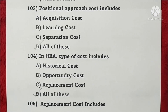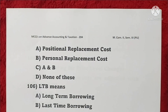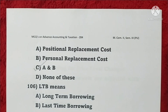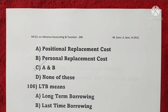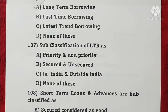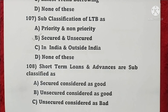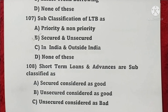Question 105: Replacement cost includes positional replacement cost and personal replacement cost — A and B, so option C is correct. Question 106: LTB means Long-Term Borrowing — option A is correct. Question 107: Subclassification of long-term borrowings is secured and unsecured — option B is correct. Question 108: Short-term loans and advances are subclassified as secured considered good, unsecured considered bad — all of these, so option D is correct.